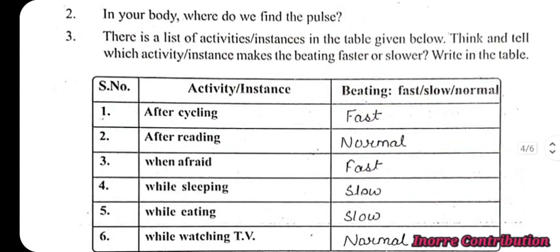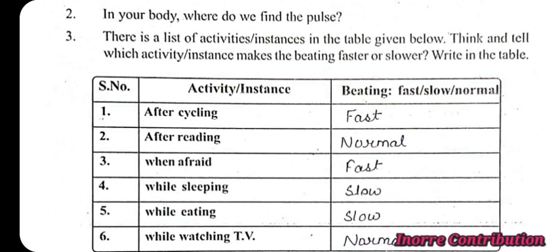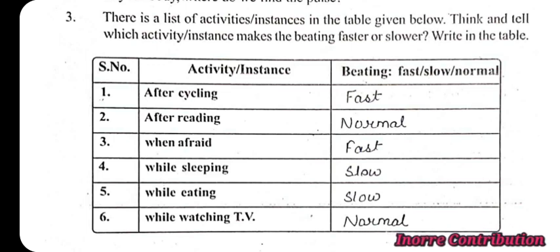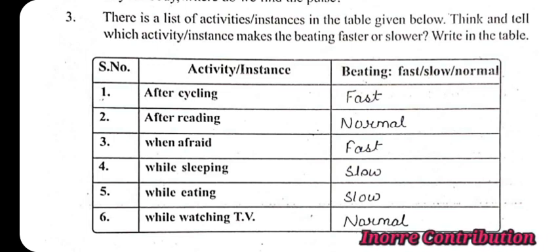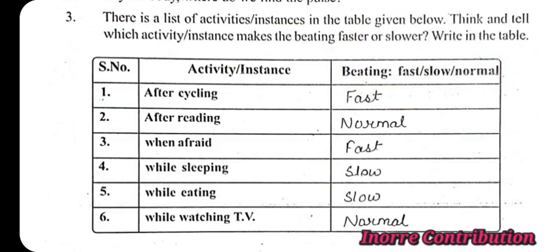There is a list of activity instances in the table given below. Think and tell which activity makes the beating fast or slower, and write in the table. After cycling: fast. After reading: slow. When afraid: fast. While sleeping: slow. While eating: slow. While watching TV: normal.